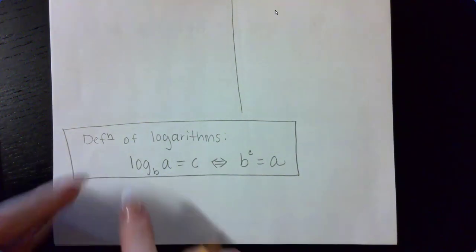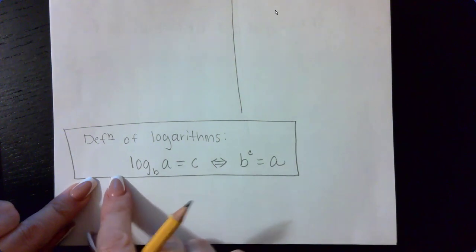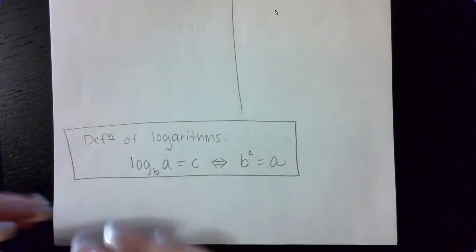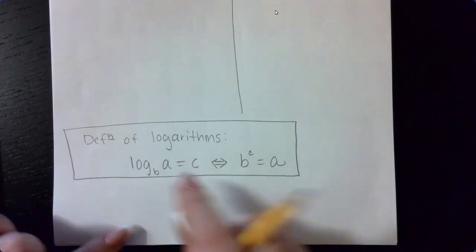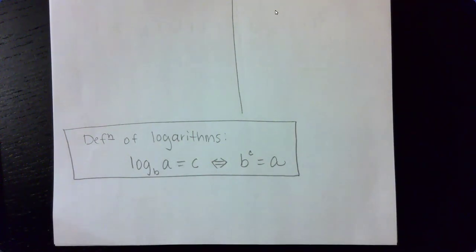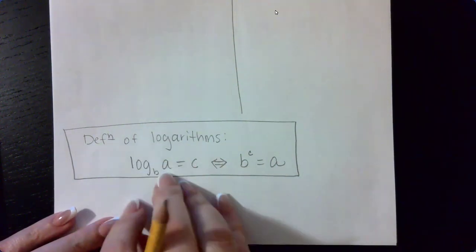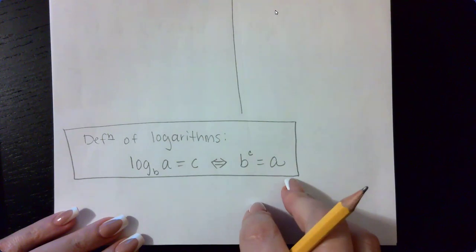It's one log, and there is no coefficient in the front. There is nothing being added or subtracted to this log. It's completely isolated. So in order for me to solve the equations above, I am going to have to isolate the logarithmic expression before I actually apply the definition of logarithms.